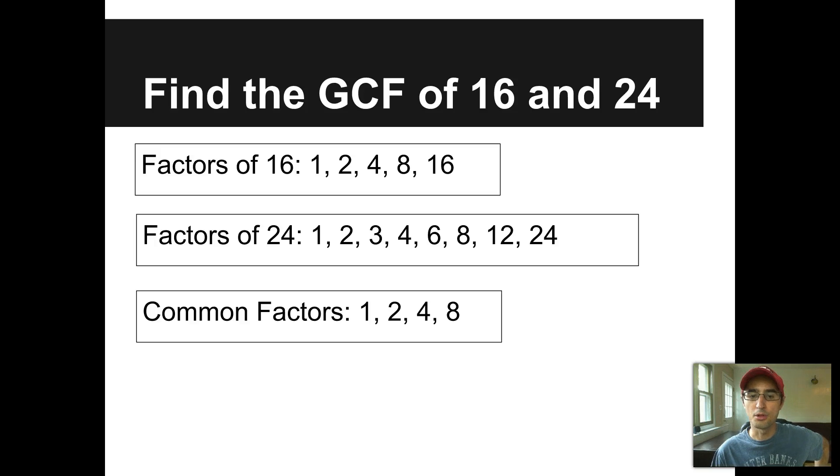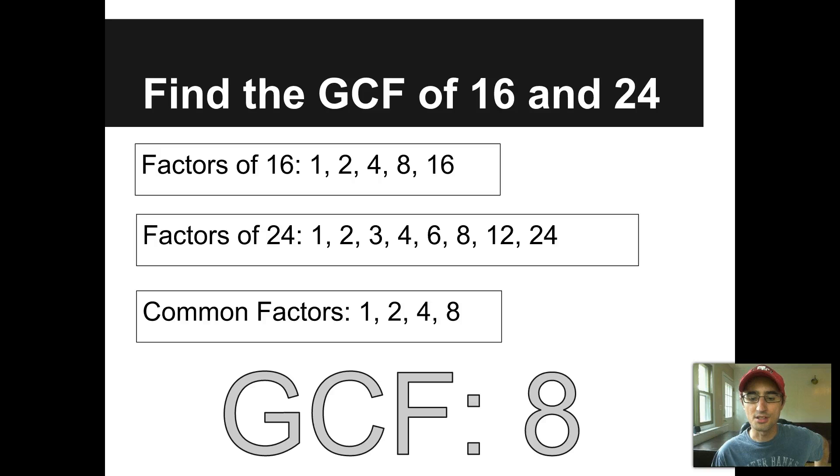The things we find in both places, I can pull out a 1, I can pull out a 2, a 4, and an 8. So the common factors are 1, 2, 4, and 8. And once we have that list complete, it's a pretty easy step to find the greatest common factor, which is the largest of those numbers, in this case, 8. Got it? GCF.